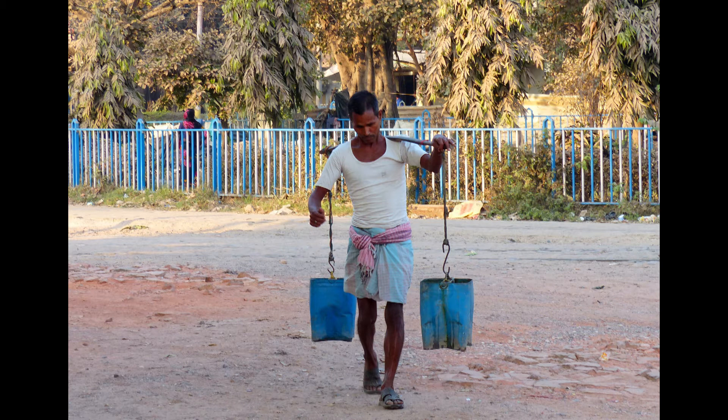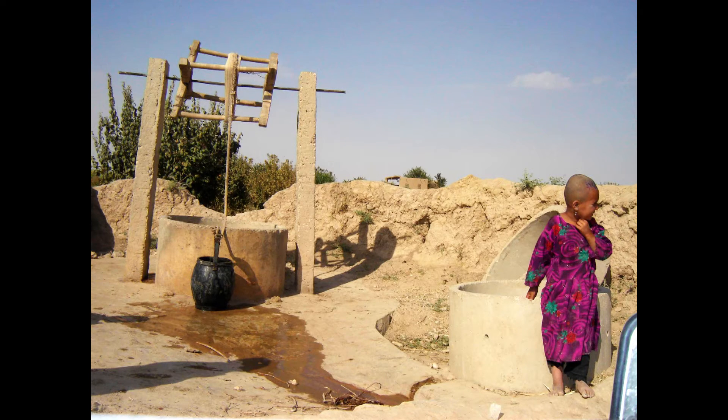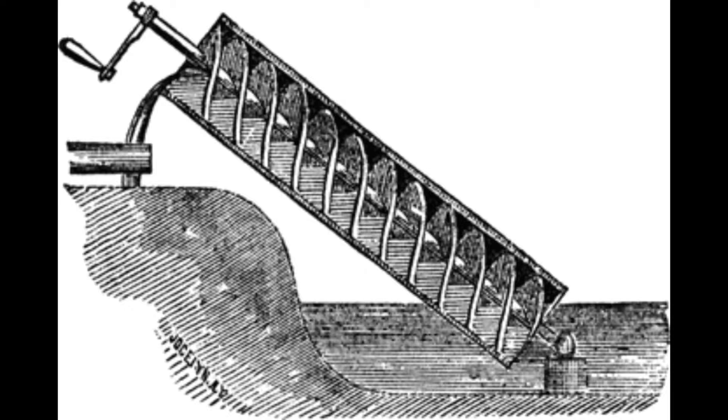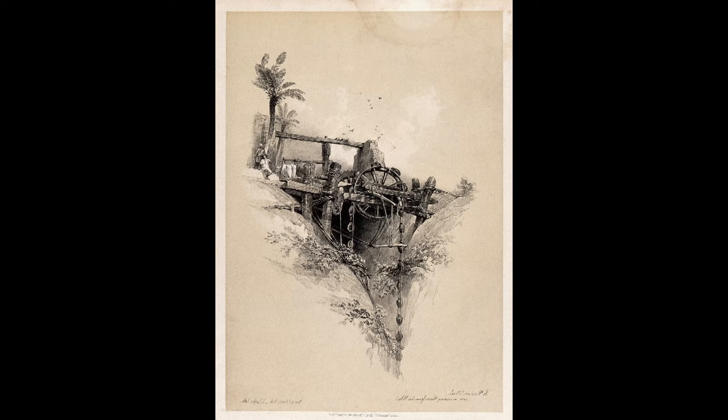The simplest way to do it is just to carry the water in a bucket, but simple machines like a rope and pulley, or more complex machines like the Archimedes screw or Persian wheel can make the task much easier.